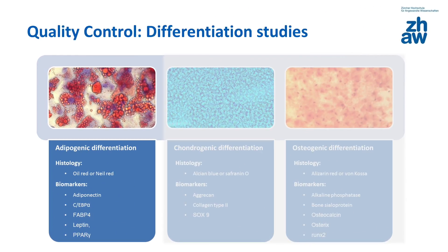After adipogenic differentiation, lipids should be stained with Nile red or histologically stained with Oil Red O. Beside the histochemical analysis, different types of biomarkers such as adiponectin, FABP4, etc. can be analyzed.